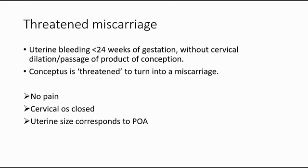The first one is threatened miscarriage, where there is uterine bleeding less than 24 weeks of gestation, and there is no cervical dilatation and also no product of conception passed out. The conceptus is threatened to turn into a miscarriage. There is no pain, the cervical os is still closed, and the uterine size corresponds to the period of amenorrhea.